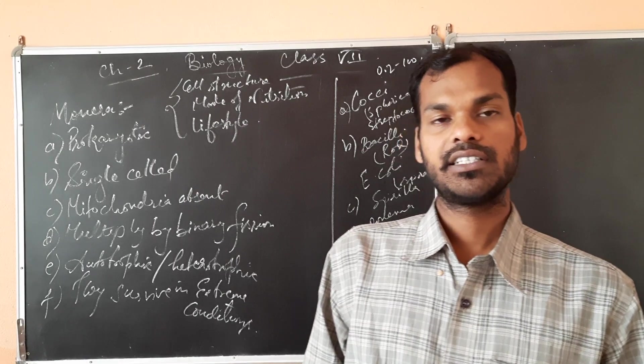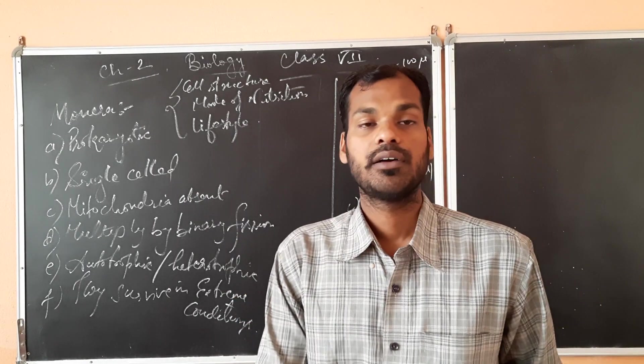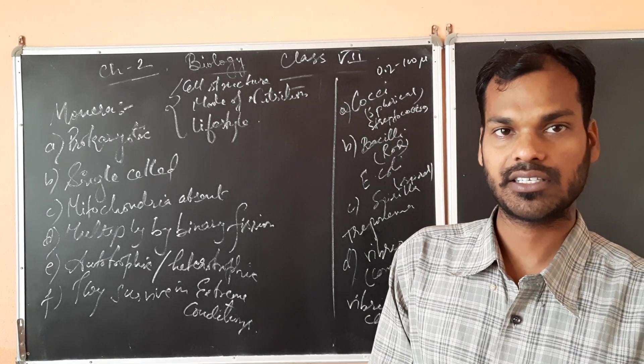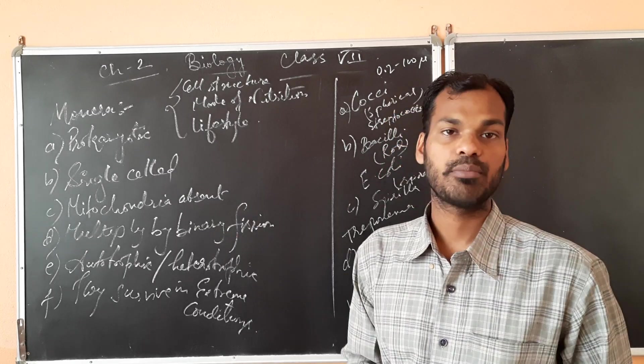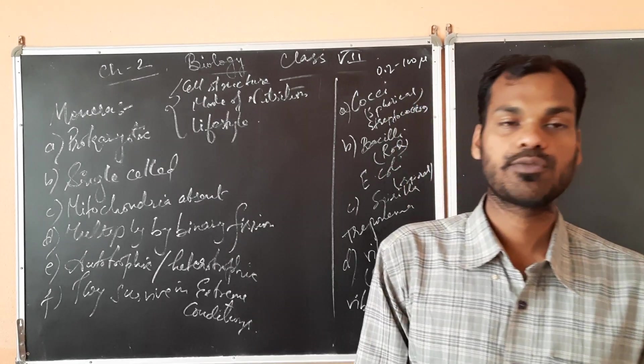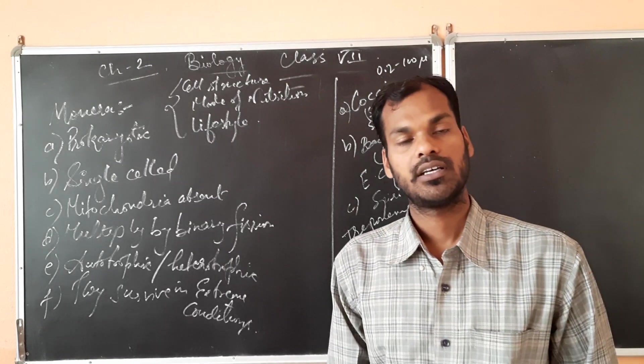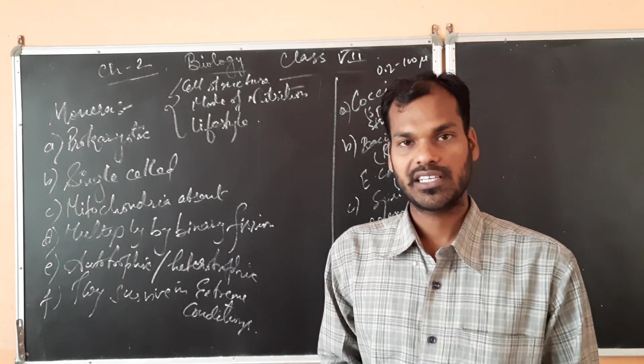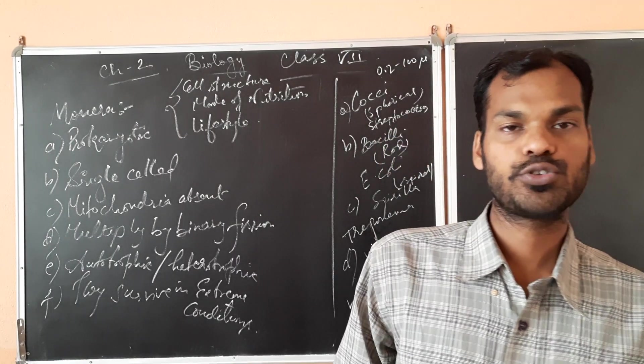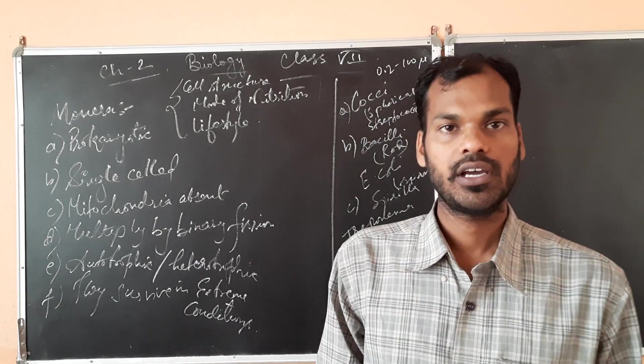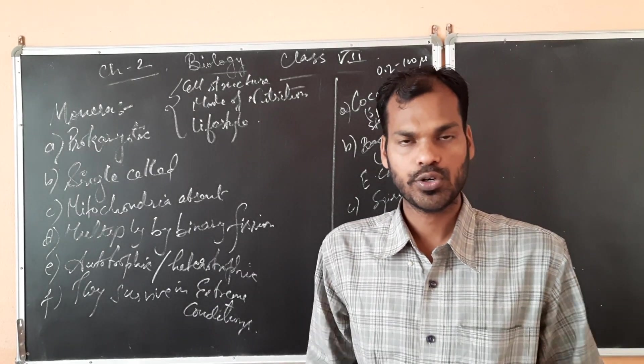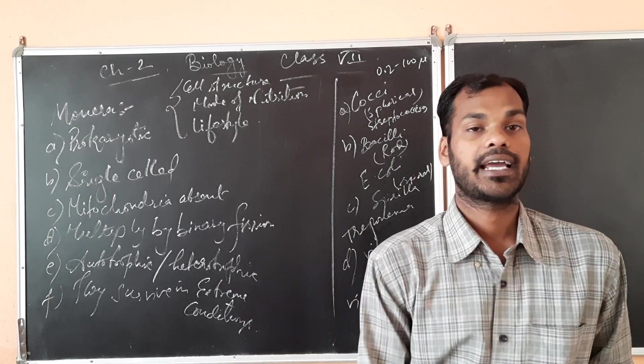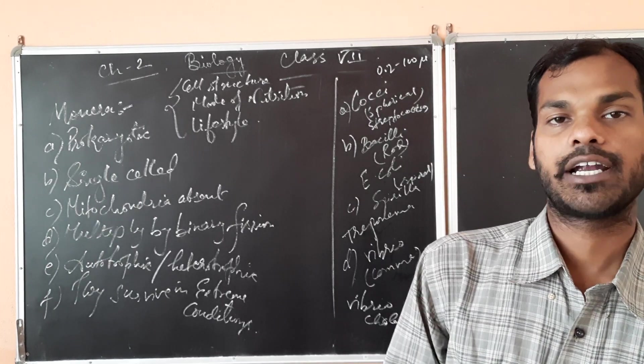Then mitochondria will be absent, the most important mitochondria which is responsible for energy synthesis, ATP synthesis, that will be absent in Monera. Next is it will multiply by binary fission, the simplest mode of reproduction where at the time of maturity the nucleus enlarges and then it divides into two. The body divides into two and also after that the cytoplasm gets divided into two, equally distributed into the two cells. That is binary fission. Next is it can have autotrophic or heterotrophic, any mode of nutrition.